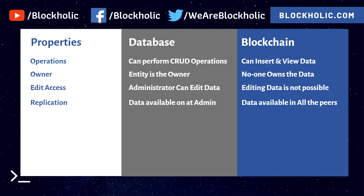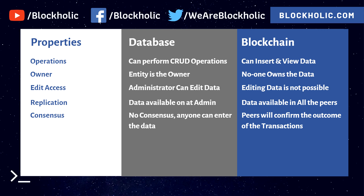In blockchain there is no single point of failure because the data is available across all peers. If there are a thousand peers in the network, all thousand will have a copy of the database. If someone tries to delete, modify, or corrupt data, it only affects their system and does not impact the others. Additionally, in traditional databases there is no consensus — anyone can enter data — but in blockchain, the majority of peers must confirm a transaction before it can be added.